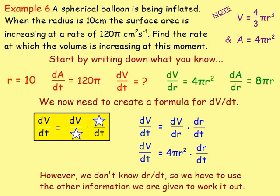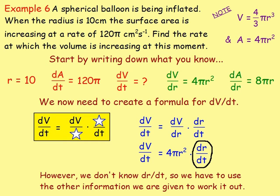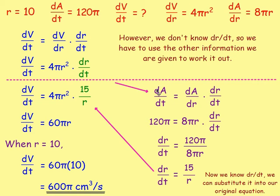We then worked through more difficult related rates problems. You still start by writing down what you know. If you're given formulas for volume and surface area, differentiate both of them. You may find that when you sub in your values, you end up with two unknowns. In that case, use the other given information to find one of them. For this example, we were told the rate of change of area was 120π, so we used that to find dr/dt, rearranged, then subbed in the value of r to get the answer.